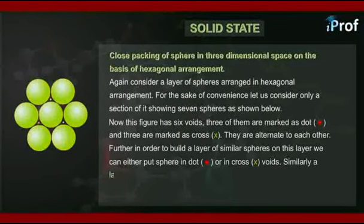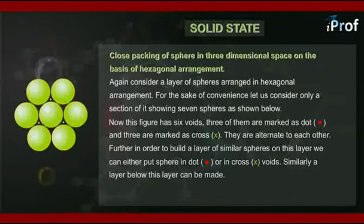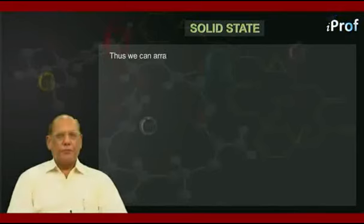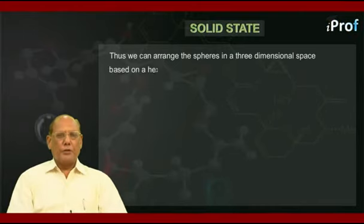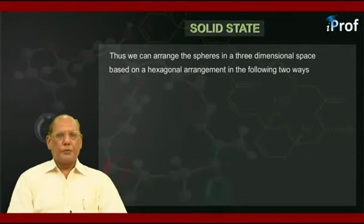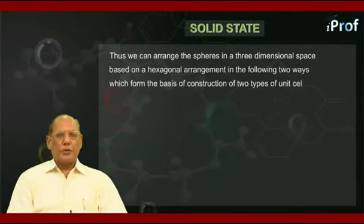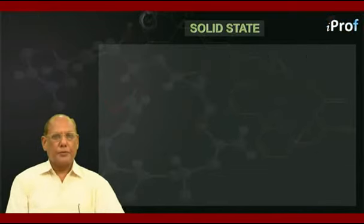Similarly, a layer below this layer can be made. So, we can arrange the spheres in a three-dimensional space based on a hexagonal arrangement in the following two ways, which form the basis of construction of two types of unit cells.